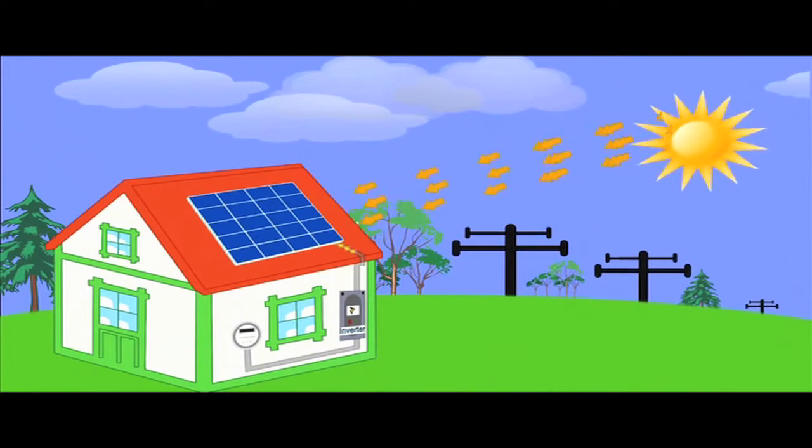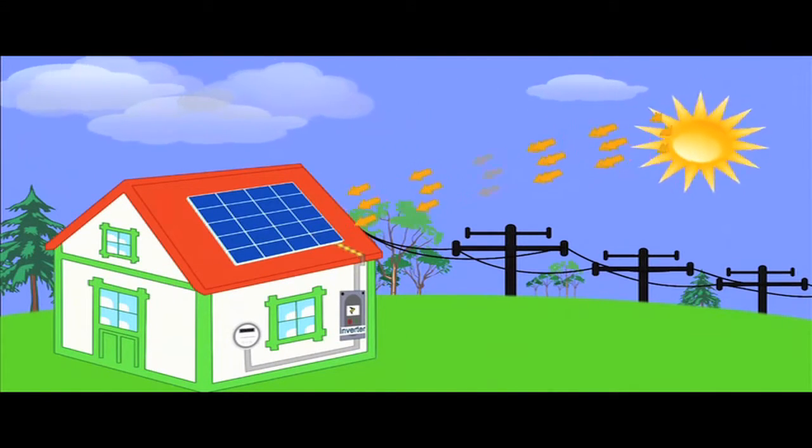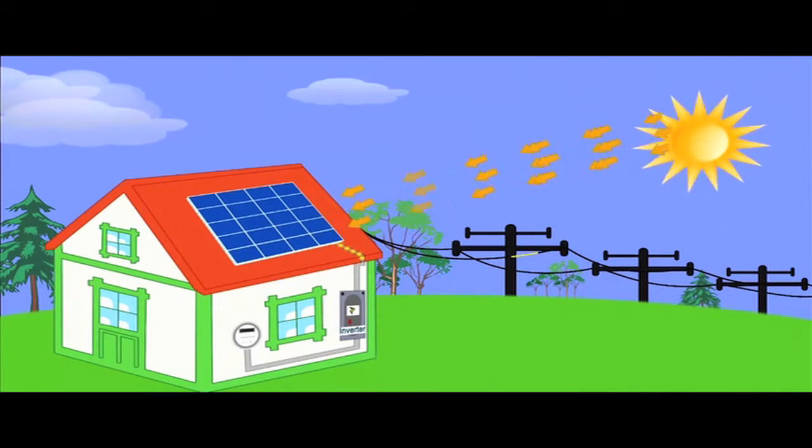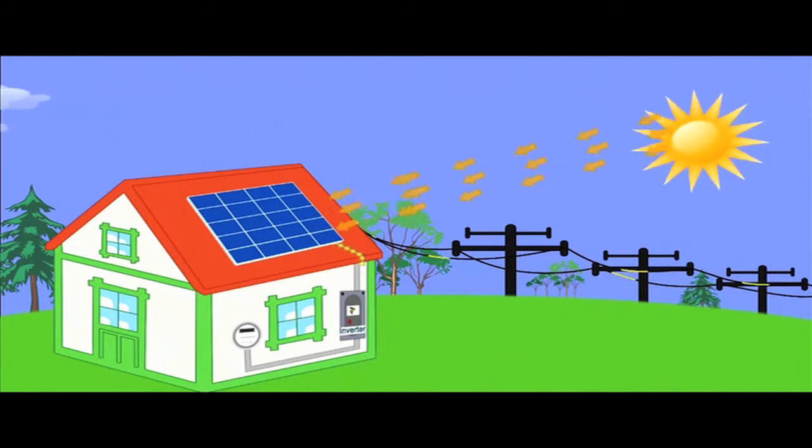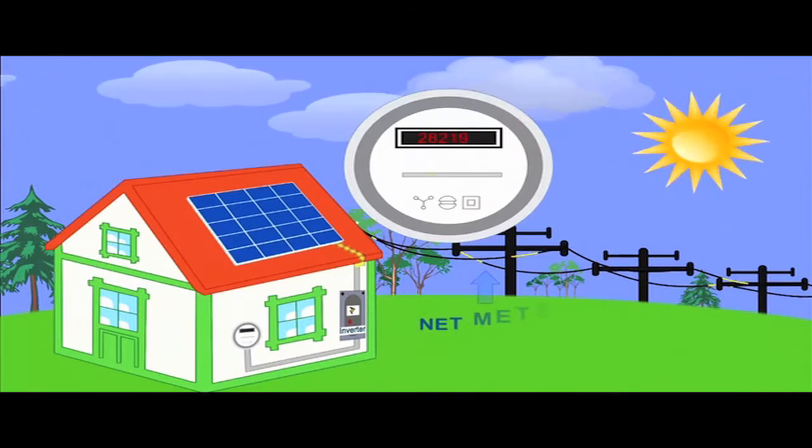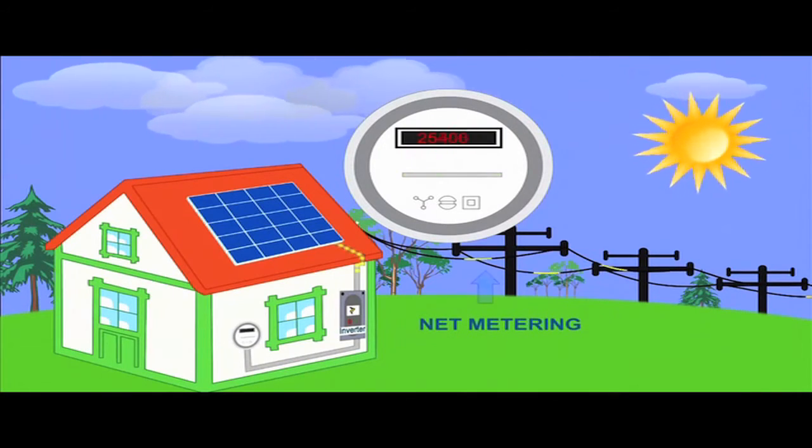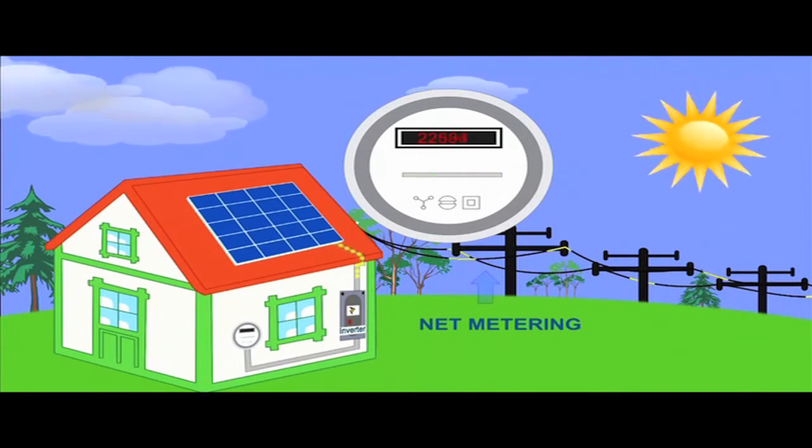What's even better, solar electric systems can produce more electricity than your home needs, and the extra you do not use goes back to your utility grid. This is called net metering, and you'll be able to enjoy watching your utility meter spin backwards.